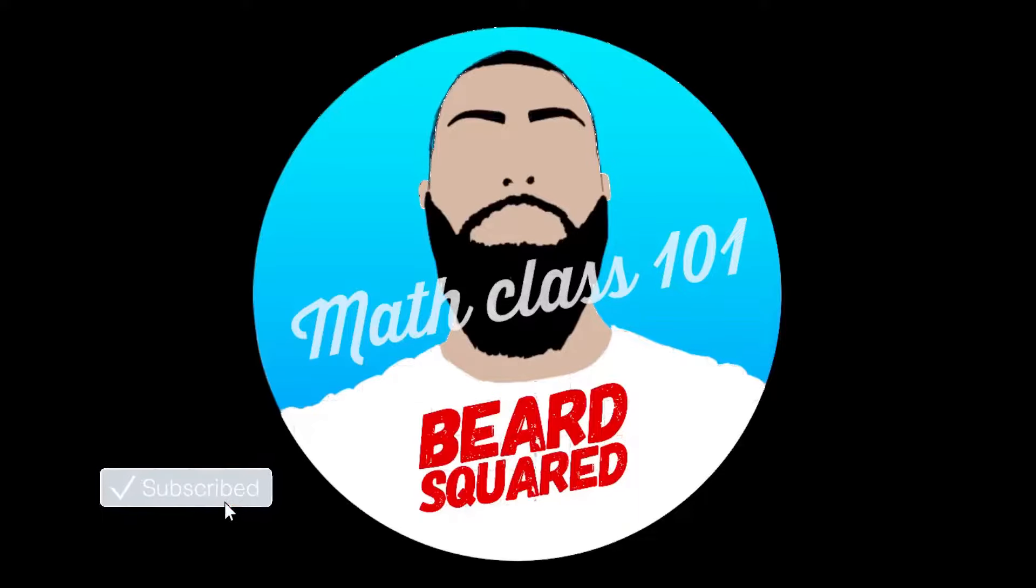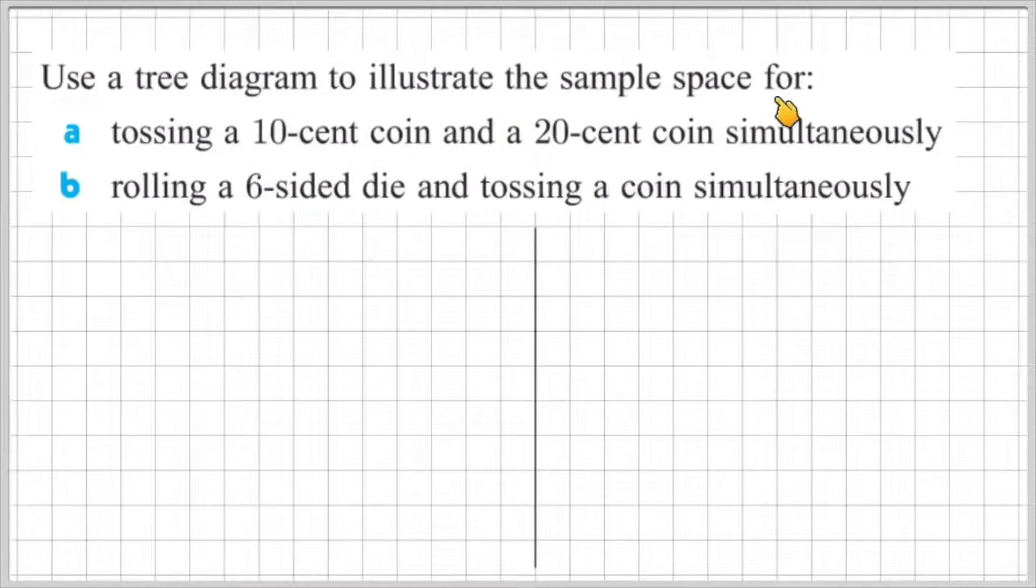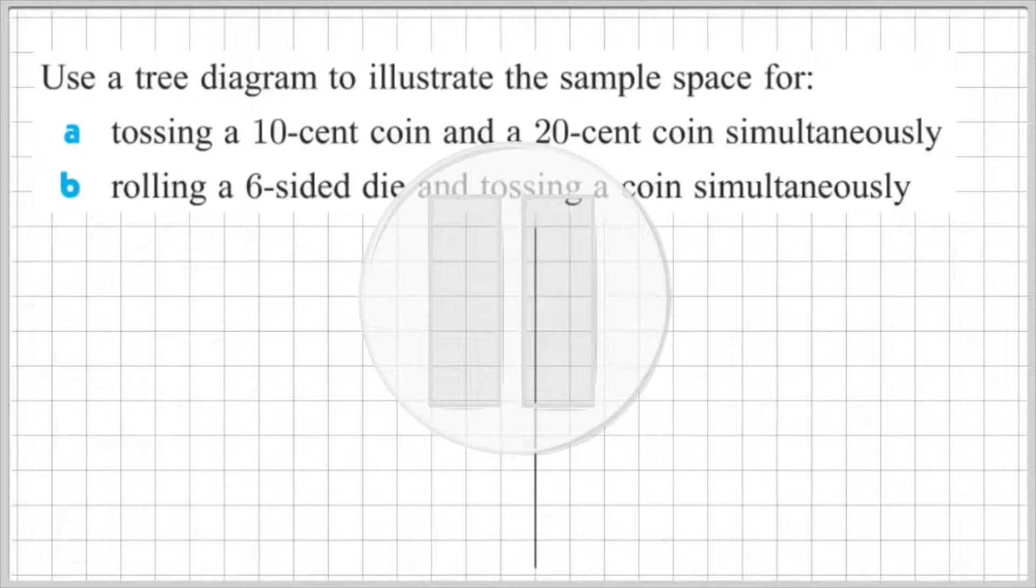Let's tackle a question. It says use a tree diagram to illustrate the sample space for A, tossing a 10 cent coin and a 20 cent coin simultaneously and B, rolling a six-sided die and tossing a coin simultaneously. You're welcome to pause the video here and try the question for yourself and then when you're ready, press play and I'll show you my work solutions.